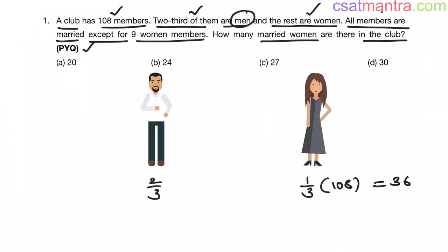Now it is said that all members are married except for 9 women members. That means 9 women are unmarried. Then number of women who are married will be 36 minus 9 my friends. That is 27. 27 women are married.